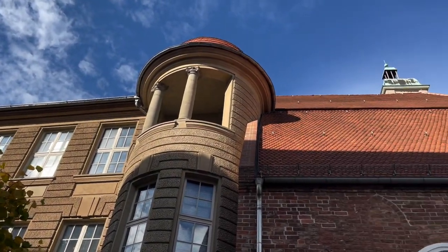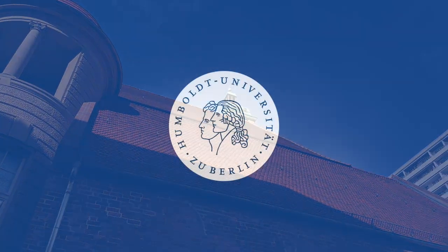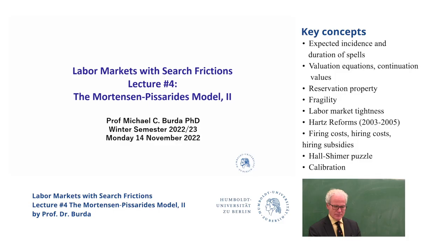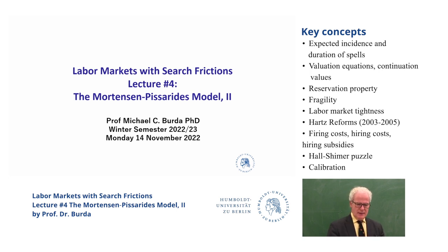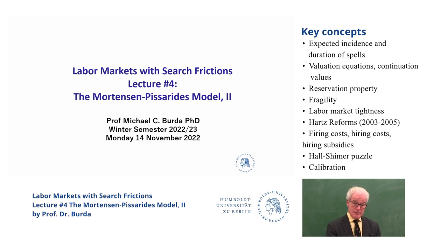Welcome back. This is the fourth lecture. Today we're going to finish up what I call macro search and matching — search and matching applied to macroeconomic contexts. For the rest of the course after that, we'll be looking at micro-search and matching. The models will be very micro-based and micro-founded, but you should be aware there's a whole literature that takes the Mortensen and Pissarides model, sometimes called the DMP — to include Diamond — and implants it into a macro model as the labor market, generating a natural rate of unemployment or an equilibrium rate of unemployment.